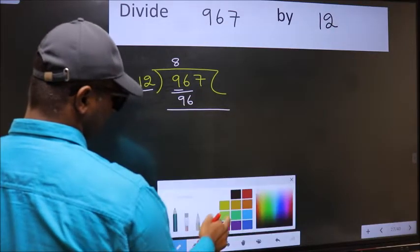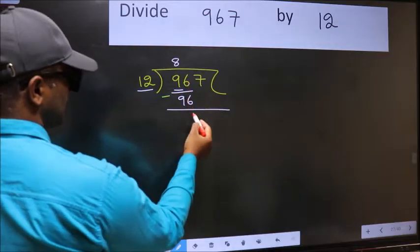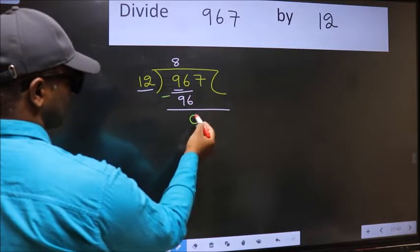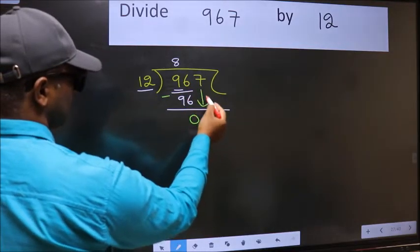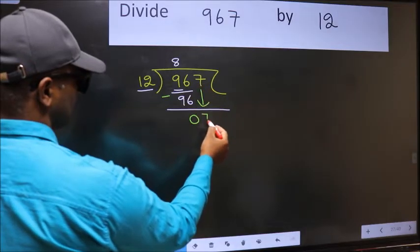Now you should subtract. 96 minus 96 is 0. After this, bring down the beside number. So 7 down.